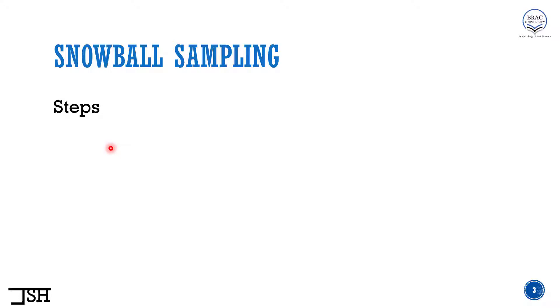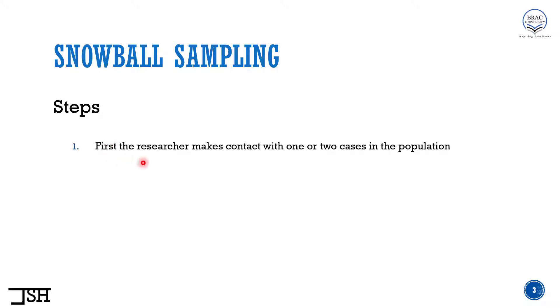Let's look at the steps of snowball sampling. Once we go through the steps, I'm sure you will understand why we call it snowball sampling. First, the researcher makes contact with one or two cases in the population — the very first step is to go to one person and take that person's interview or make them fill out the survey.